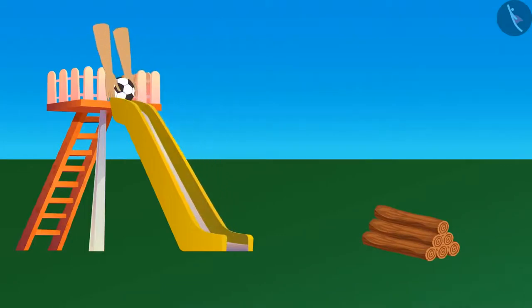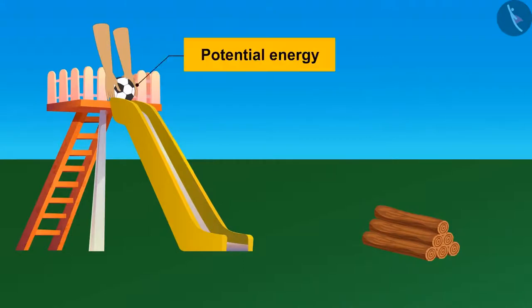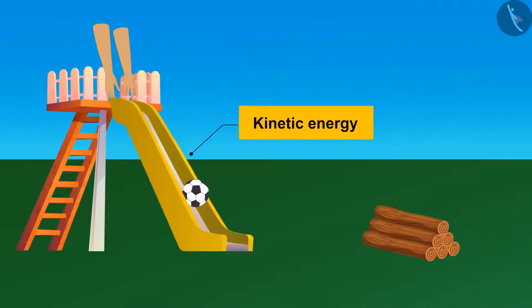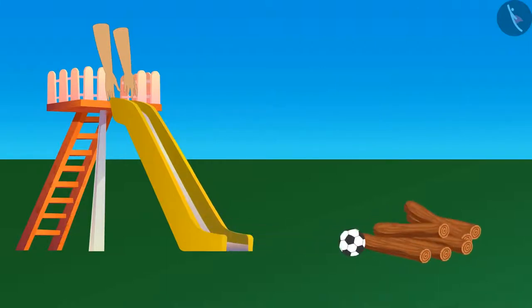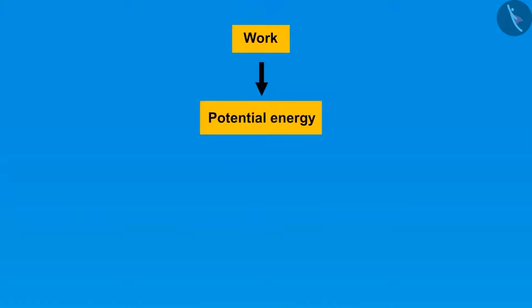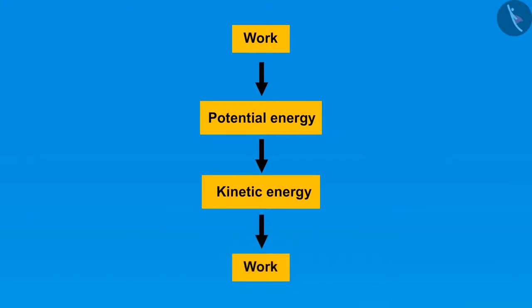Let's take an example of potential and kinetic energy. We did some work to put a ball on the top of a slide. Due to this work done, a difference in height is created, which gives the ball some potential energy. If you push this ball a bit, the potential energy gets converted into kinetic energy. If this ball collides with a bunch of sticks and the sticks fall apart, the kinetic energy of the ball does work on the sticks to make them fall apart. So: work is converted into potential energy, potential energy into kinetic energy, and kinetic energy into work again.